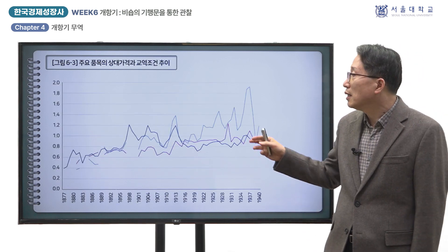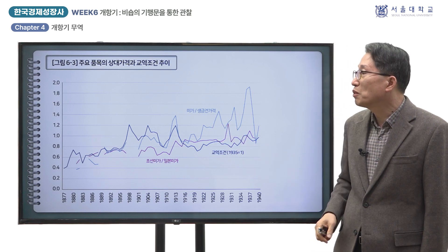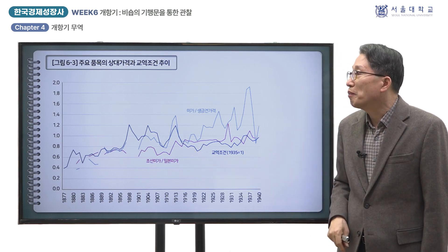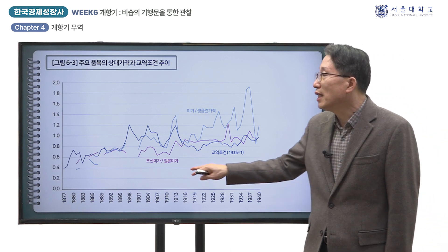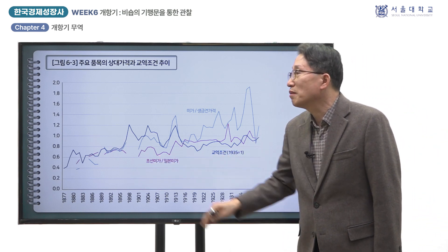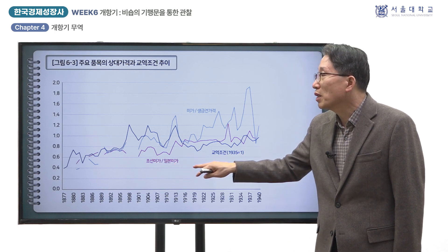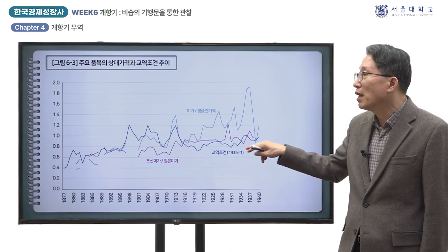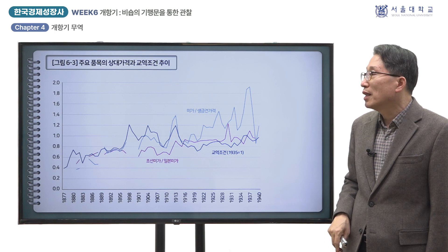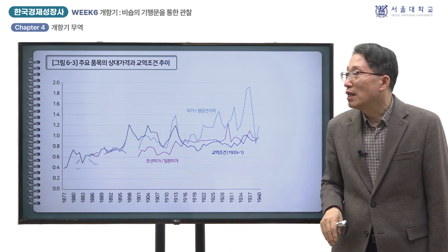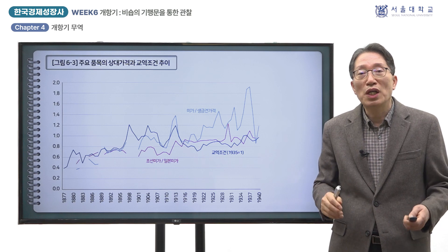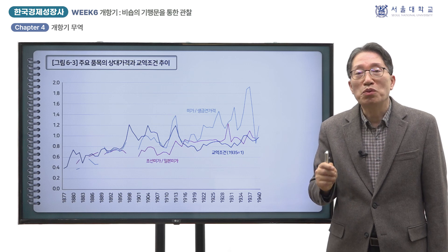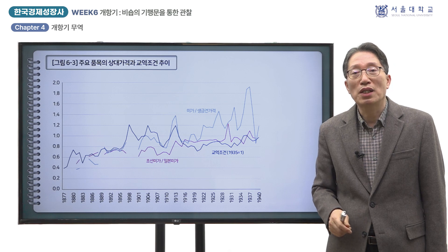그림 6-3은 상대 가격과 교역 조건의 추이를 보인 것입니다. 먼저 조선미의 수출 가격을 일본 미 가격과 비교해서 보면, 1881년에는 일본 미의 48%로 낮았지만 이후 점차 격차가 좁혀져 1910년에는 69%에 달했습니다. 1930년대 가면 두 지역의 쌀값이 거의 근접한 것으로 나옵니다. 이것은 개항 이후 식민지로 가면서 쌀 수출이 조선에 상대적으로 유리해졌음을 뜻하는데, 이것은 농업에서 작물의 구성이 쌀로 집중되는 미곡 단작화를 촉진한 요인으로 작용하였다고 생각됩니다.